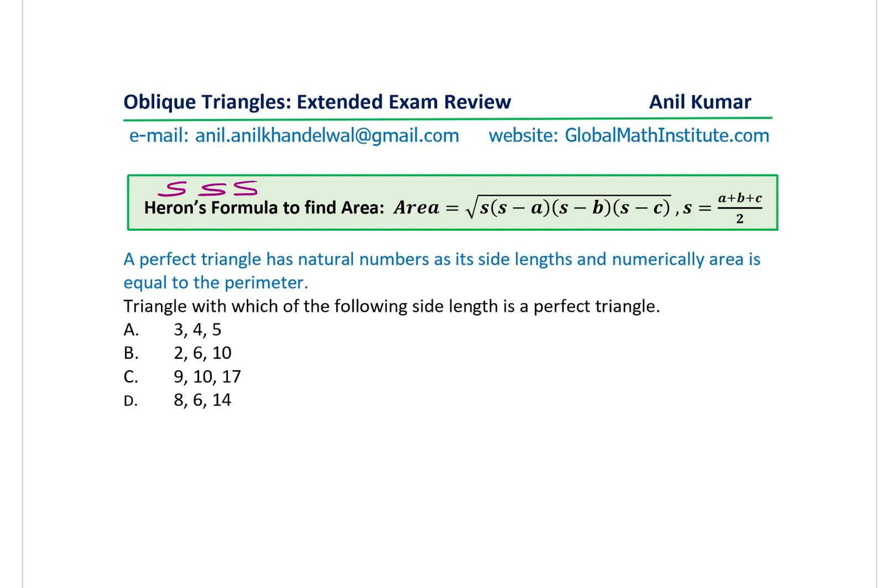Now, we will also understand another term here, which is what are perfect triangles. This is a new term for many students. A perfect triangle has natural numbers as its side lengths and numerically, area is equal to perimeter. Numerically means units will be different, right? Area and perimeter. But numerically, they have the same value.